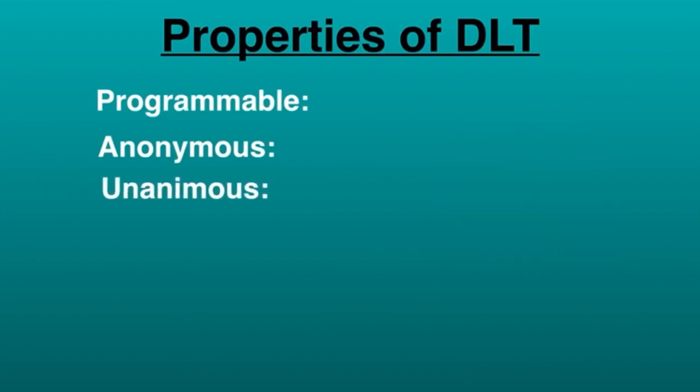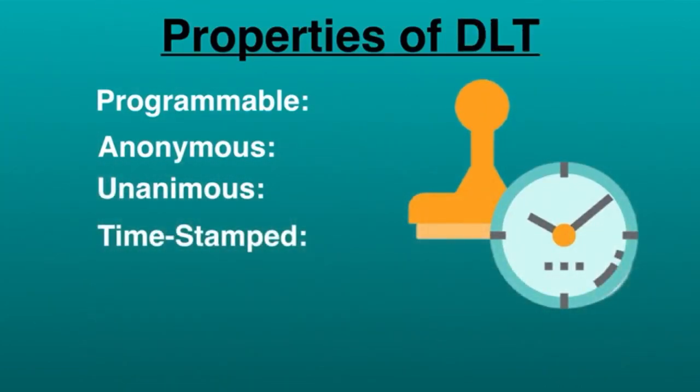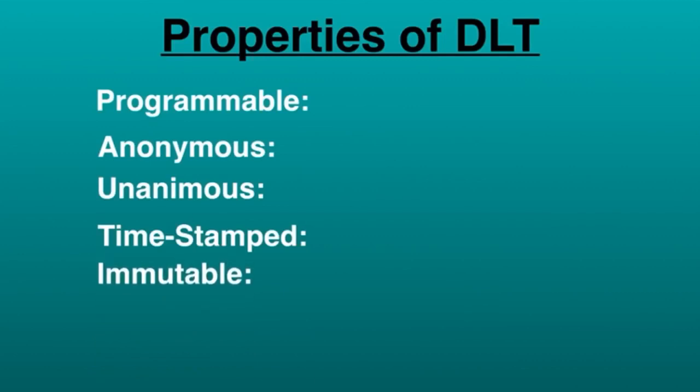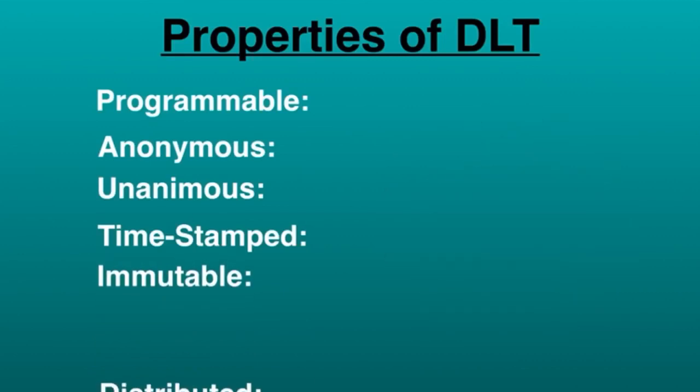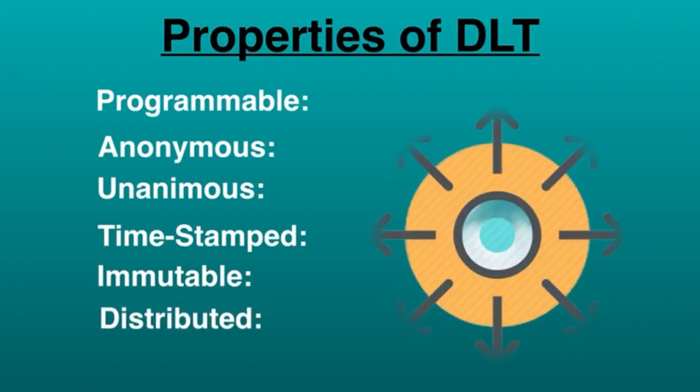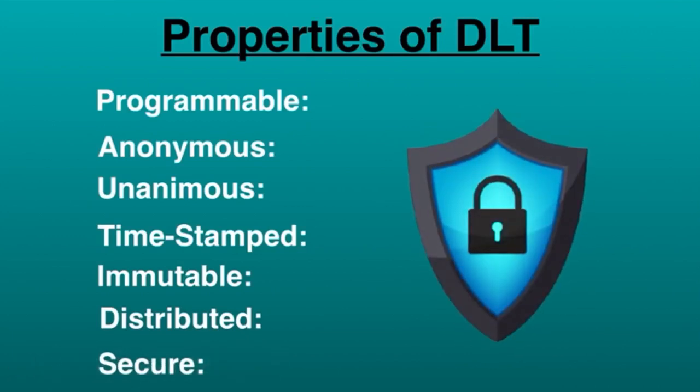All the network members agree to validate each of the records. Transaction timestamp is recorded on the block. Any validated records are immutable and cannot be changed. All the network members get a copy of the ledger for complete transparency. All the records are individually encrypted, so no one can access them.